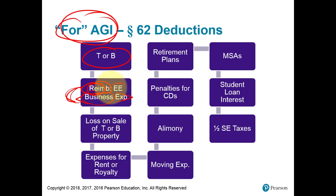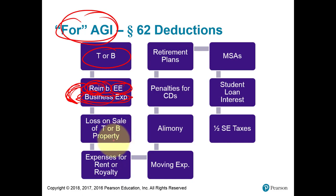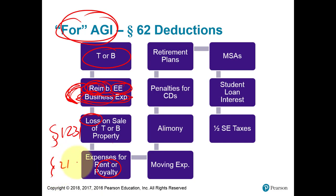Most business expenses claimed by employees that are unreimbursed would be claimed as an itemized deduction, so it would have no effect on AGI. Loss on a sale of business property — the typical example would be selling your delivery truck or an office building — if you incur a loss, that's called a Section 1231 loss and you can claim that as an ordinary deduction for AGI. Rental operations under Section 212, production of income activity — the expenses you incur for that rental property are for-AGI deductions.